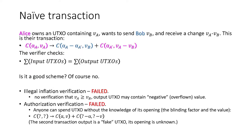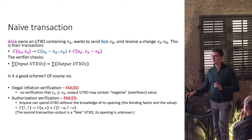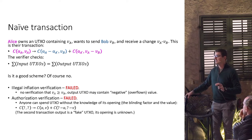Let's see how transactions are built in Mimblewimble. There are UTXOs, each denoted by a commitment. Alice owns a commitment with blinding factor alpha-Alice and value V-Alice, and she wants to send value V-Bob to Bob, with the change (V-Alice minus V-Bob) going back to Alice. So there is one input commitment and two output commitments. The verifier should check two things: no illegal inflation and authorization. But a naive scheme fails in both categories — Alice can spend more than she has, because if V-A is less than V-B, the negative number wraps around modulo the group order.